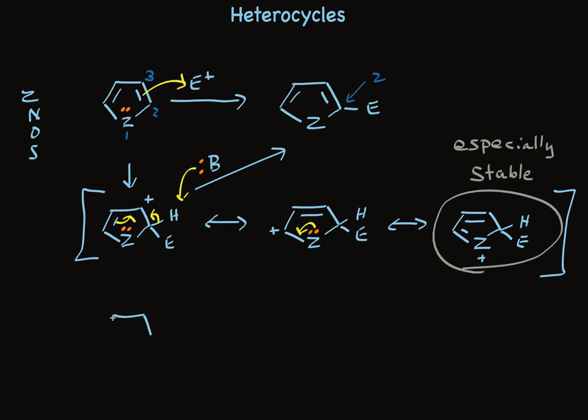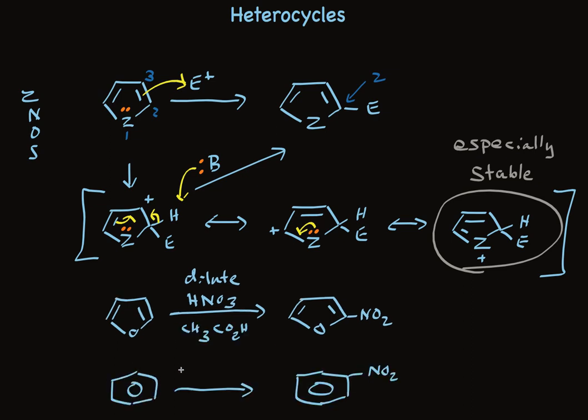Furan, that's the oxygen aromatic heterocycle, undergoes electrophilic aromatic substitution to replace hydrogen by NO2. This reaction can be done with dilute nitric acid using acetic acid as solvent. By way of contrast, take a look at benzene. To accomplish nitration, we need to use concentrated nitric acid, concentrated sulfuric acid, and heat. Just to be clear and accurate, I should put an H along with this nitrogen.